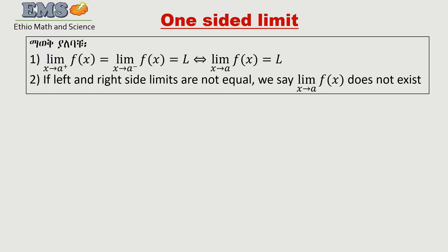If the right-side limit and the left-side limit both approach the same value, we say that the limit of F of x as x goes to A equals L. If the right-side limit and left-side limit are not equal, we say the limit of F of x as x goes to A does not exist.